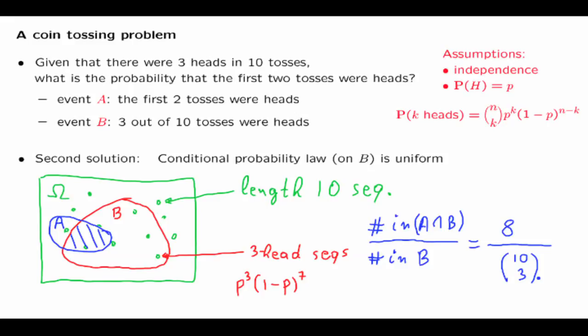Both approaches give the same solution. This second approach is a little easier because we never had to involve any p's in our calculation — we got to the answer directly. The reason this approach worked was that the conditional universe, event B, had a uniform probability law on it.